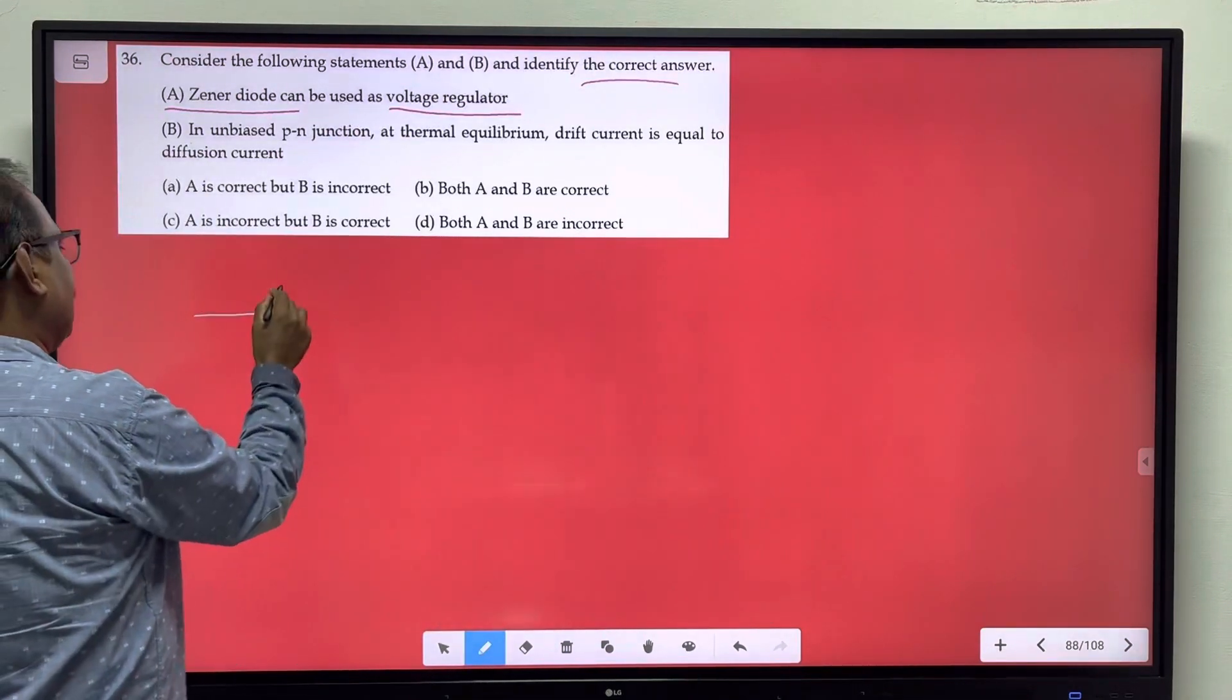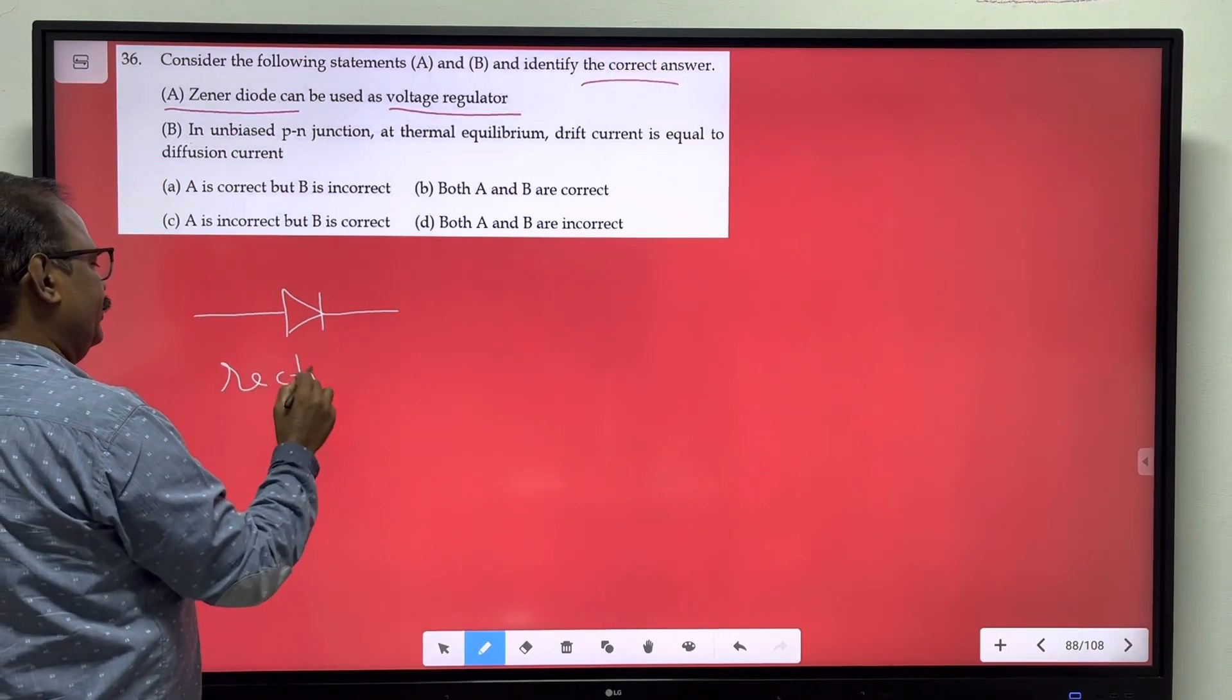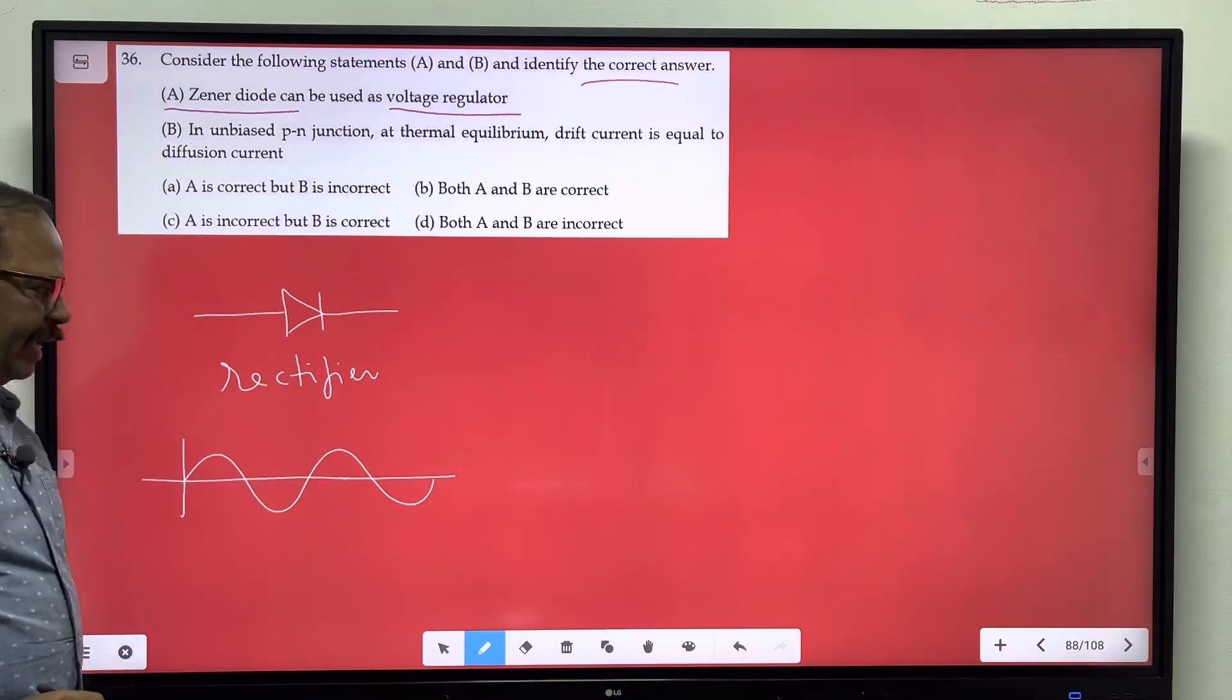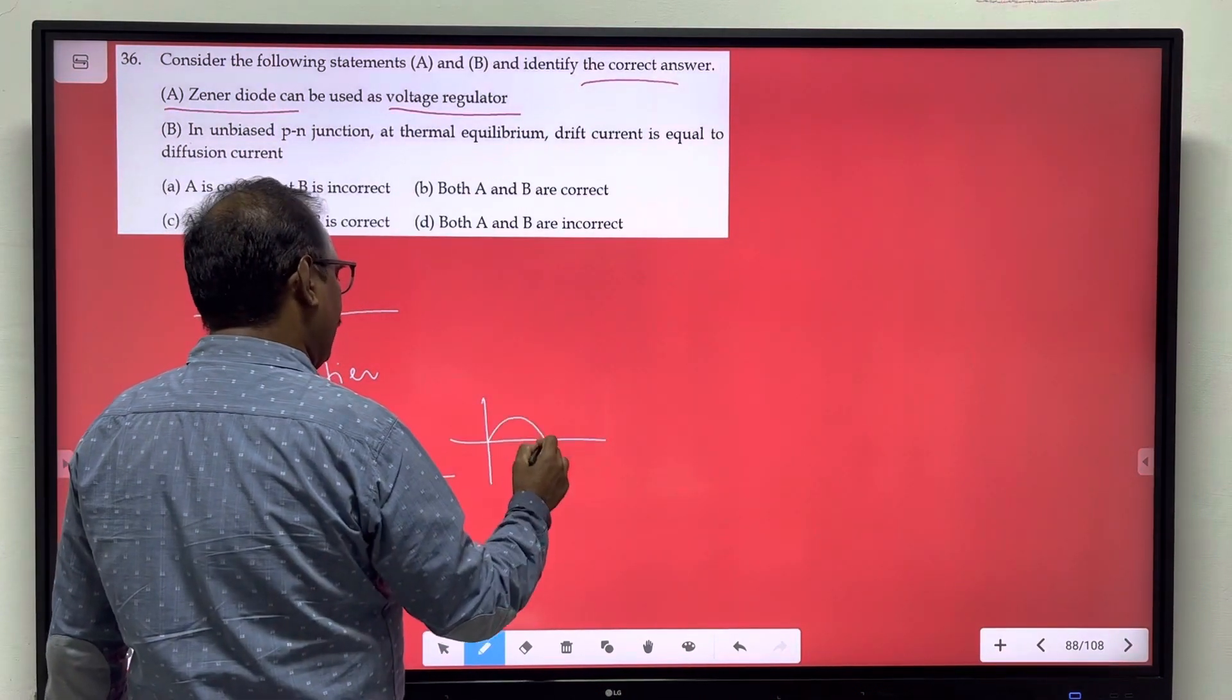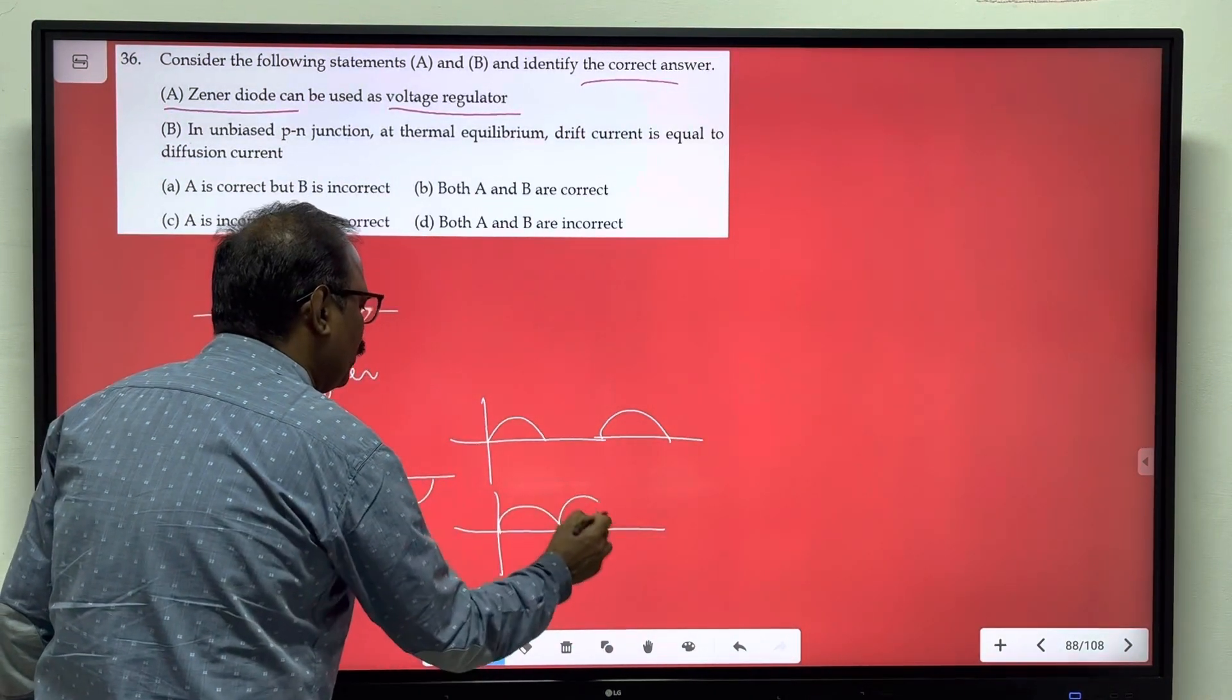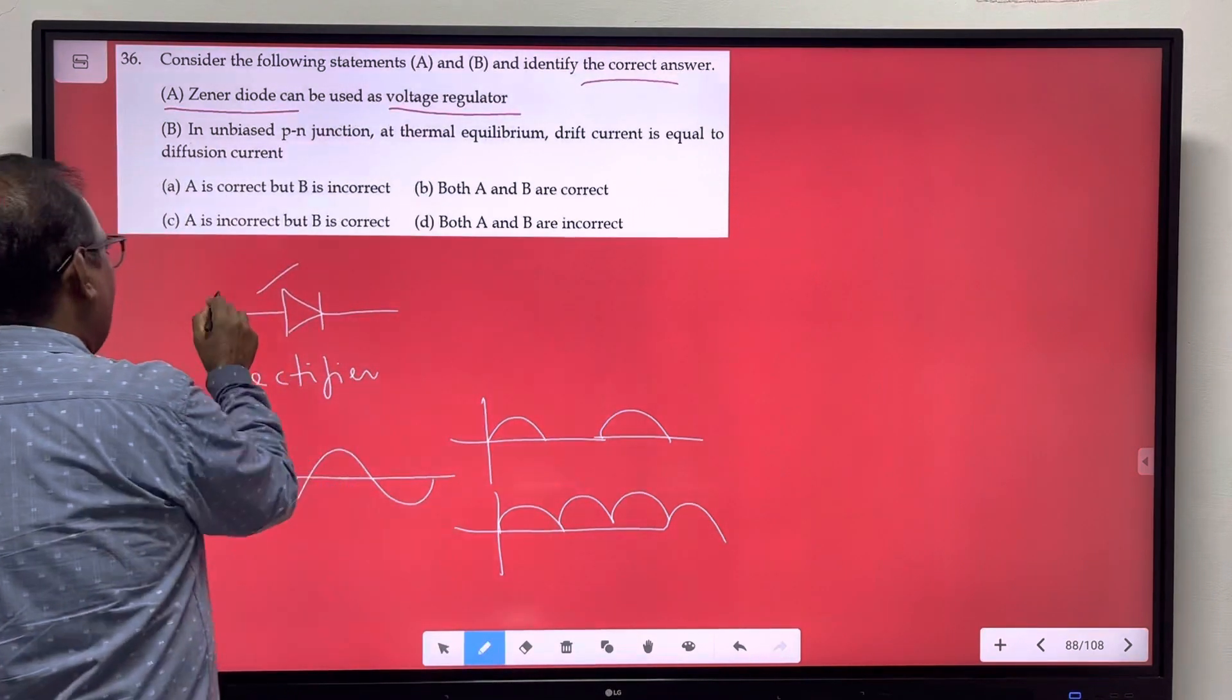One PN junction diode is useful as a rectifier. That is alternating potential or alternating current. This is half wave rectifier, that means rectify negative cut. Full wave rectifier means positive. This is a diode. Diode forward biasing will work.